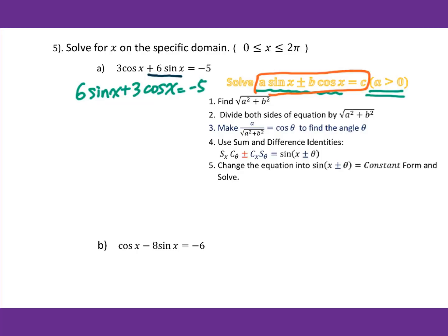Then find the square root of A squared plus B squared. We know A equals 6 and B equals 3, so A squared plus B squared is 6 squared plus 3 squared, which equals 45. You don't have to simplify because the calculator will do that. Then we divide the equation by square root of 45.